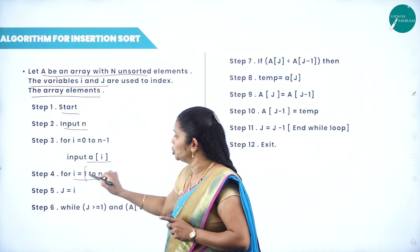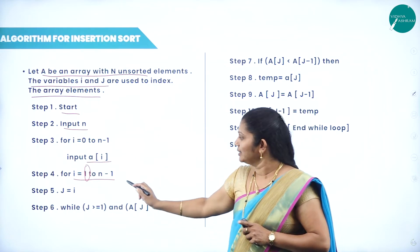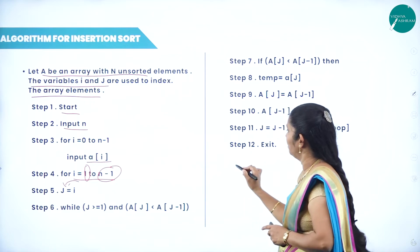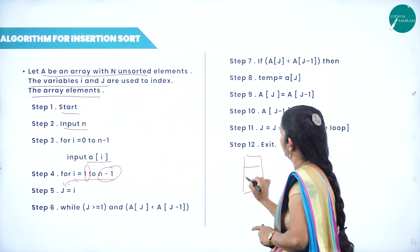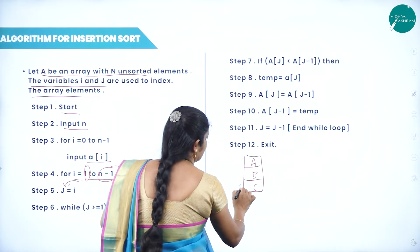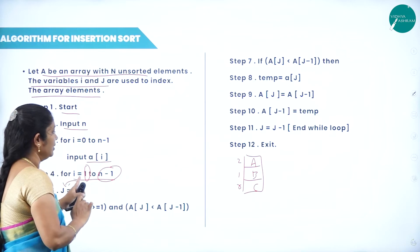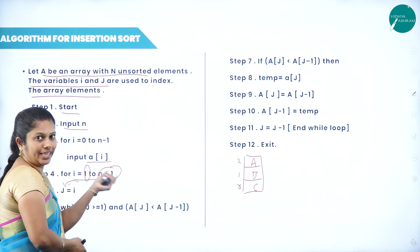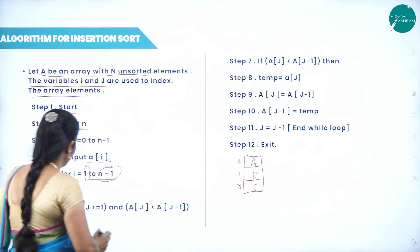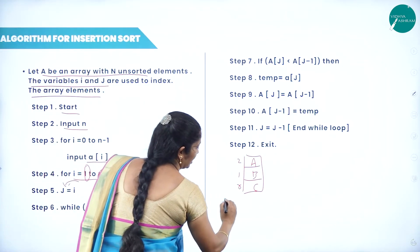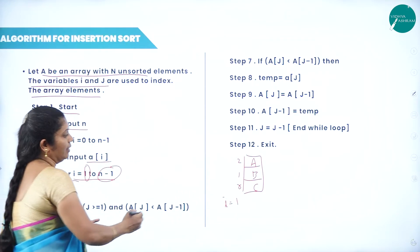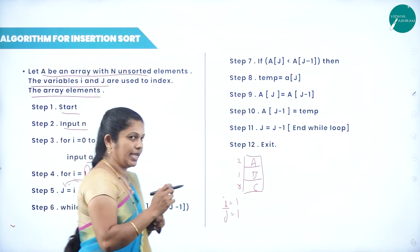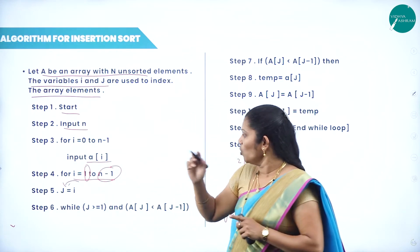The first element at position 0 is considered sorted; the unsorted elements start from position 1 to the last element, n minus 1. That is why in the algorithm we write: for i equals 1 to n minus 1. Do not start from 0 — 0 is considered the sorted element. Whatever value is in i, we move it to j. In the first iteration, i equals 1, so j is also 1.